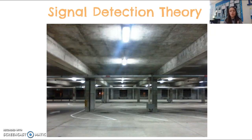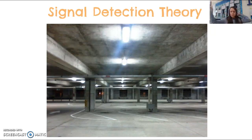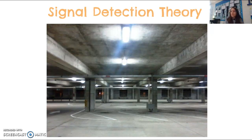But you could be in a different situation — the middle of the day, lots of cars around, bright, lots of people, not anxious — and that same car starts on the second floor, and you don't hear it. Signal detection theory tells us it depends on the situation, the intensity of the stimulus, and how you're feeling. One time you might detect a stimulus; another time you might not. We don't always detect things the same way every single time.